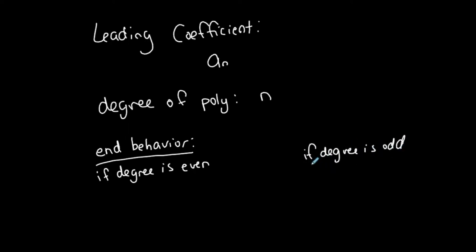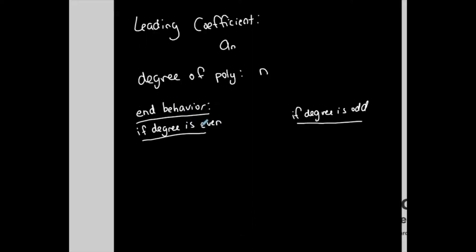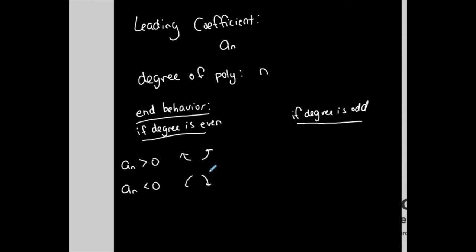End behavior is determined by both the degree and the leading coefficient. If the degree is even and the leading coefficient is positive, the graph rises on both the left and right. If even and negative, it falls on both sides. If the degree is odd and the leading coefficient is positive, it falls on the left and rises on the right. If odd and negative, it rises on the left and falls on the right.